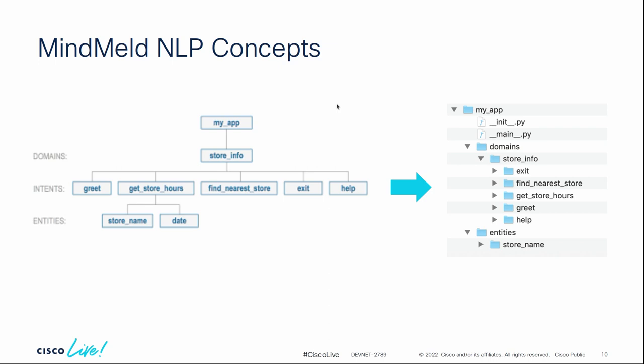So how do you actually use this thing? The idea behind the MindMeld NLP SDK — and a lot of NLP products that are out there — focuses on three things. There are domains, which is sort of the area of interest. This ends up being a directory in the project. For example, if you're putting together a chatbot and an assistant that can provide info about your stores to customers, that would be a domain.